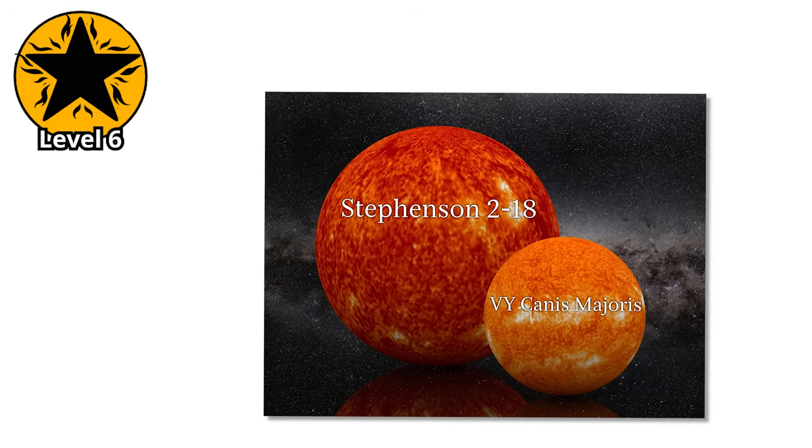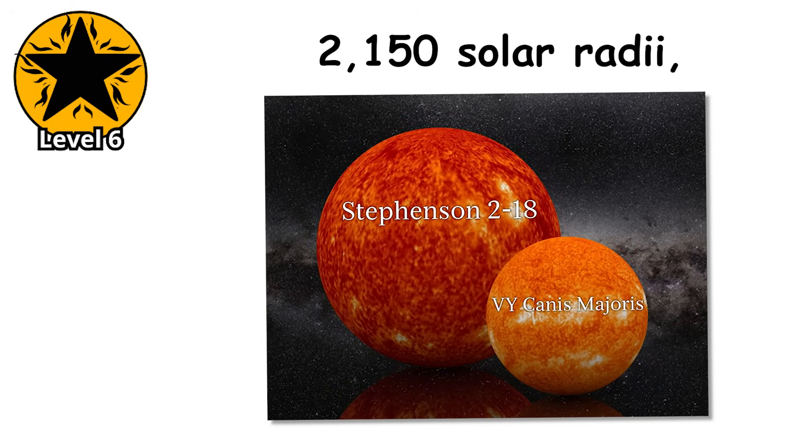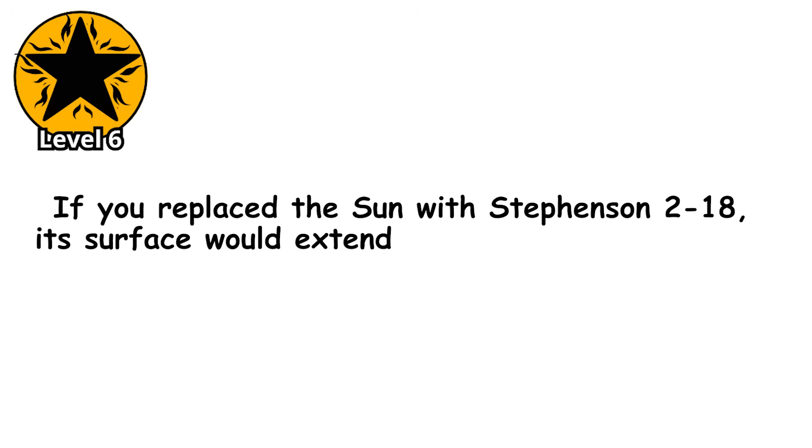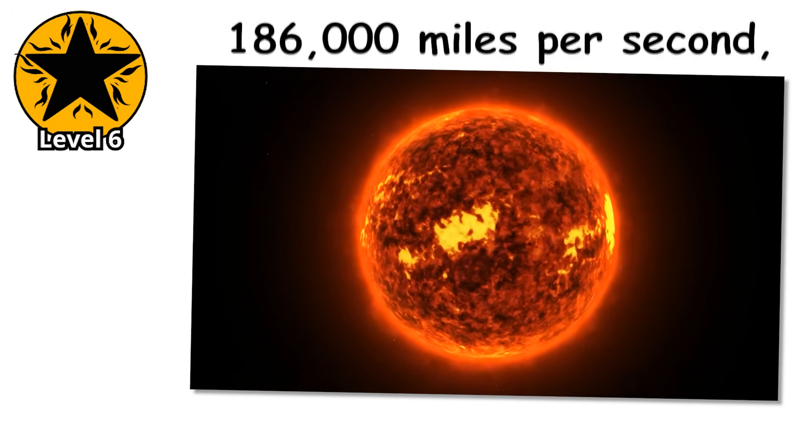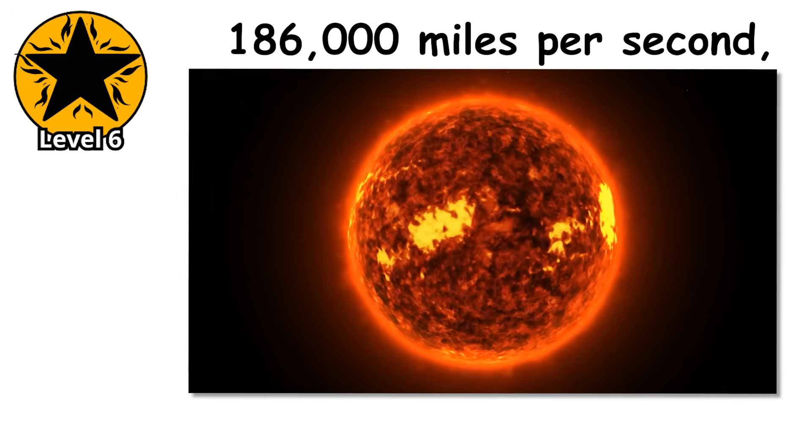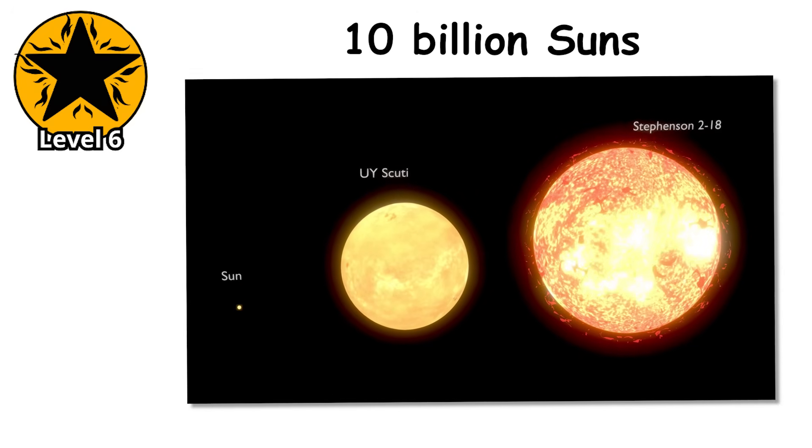Its radius is estimated at around 2,150 solar radii, meaning if you replaced the sun with Stevenson 2-18, its surface would extend past the orbit of Saturn. To put that in perspective, light traveling at 186,000 miles per second takes about 8.7 hours to travel from one side of Stevenson 2-18 to the other. You could fit nearly 10 billion suns inside its volume.